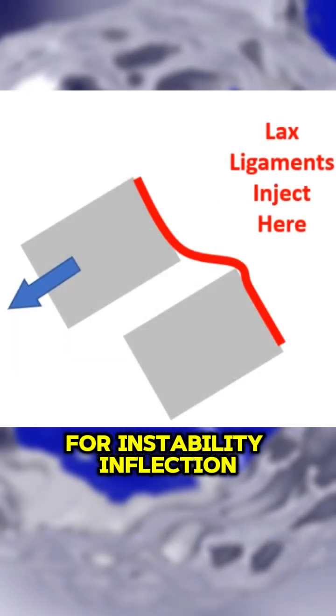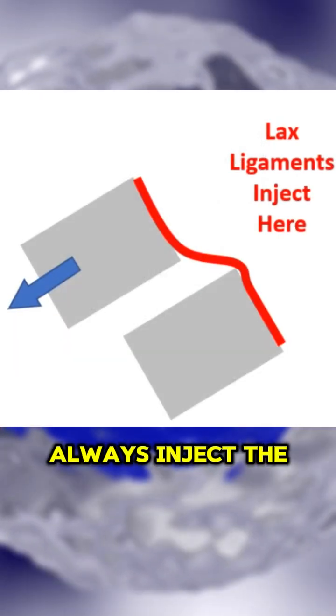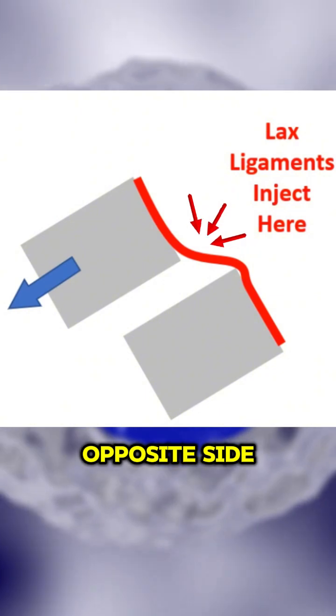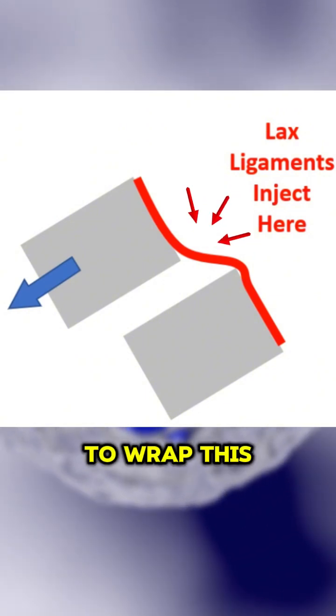For instability in flexion and extension, always inject the ligaments on the opposite side of the movement.